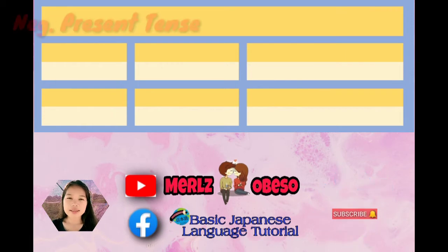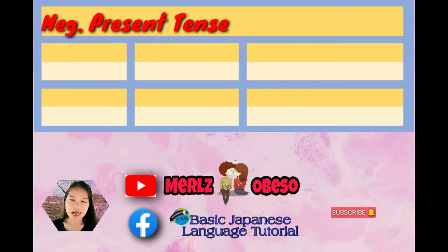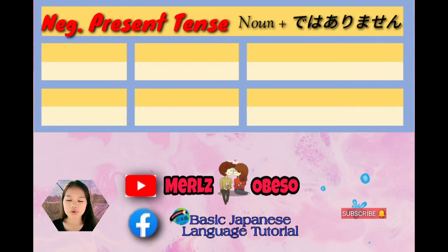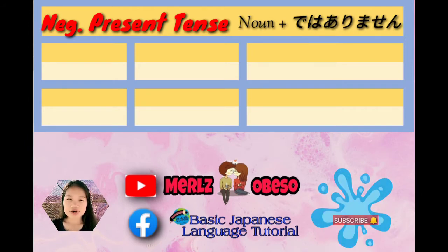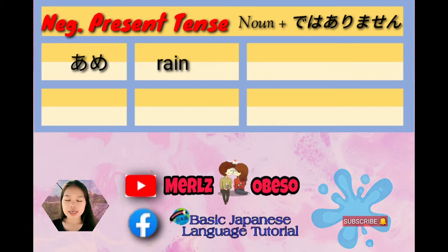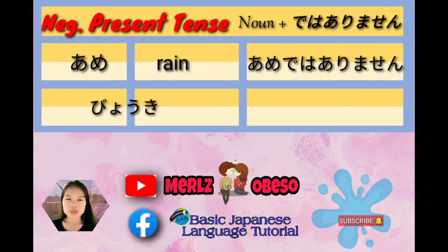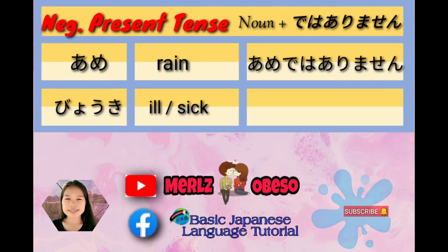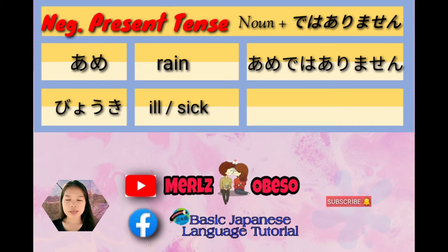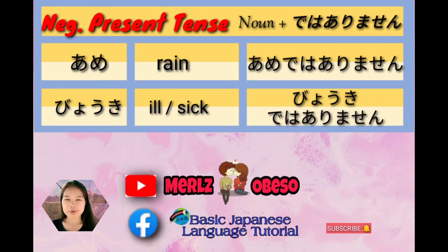Next subform: negative present tense. Noun plus dewa arimasen. Or in English, it's not. First example: ame, rain. Noun and ad dewa arimasen magiging ame dewa arimasen — in English, it's not raining. Next example: buki, ill or sick. Noun plus dewa arimasen magiging buki dewa arimasen — or it's not ill or it's not sick.